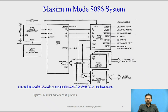In the maximum mode, there may be more than one processor in the system configuration. The basic function of the bus controller chip 8288 is to derive control signals like read and write for memory and I/O devices, and DEN, DT/R, ALE, etc.